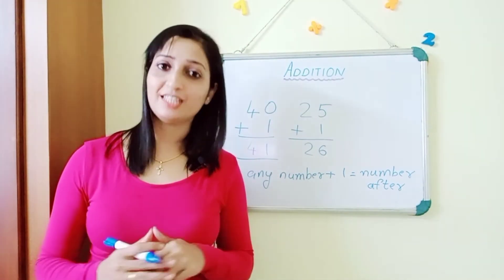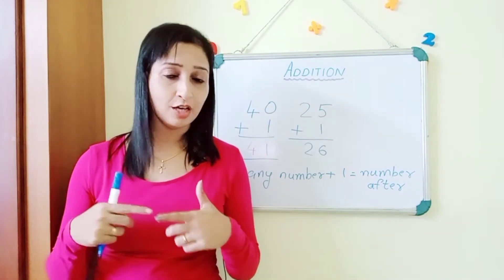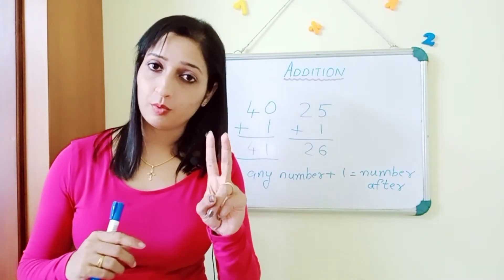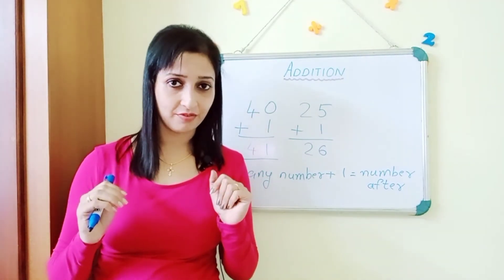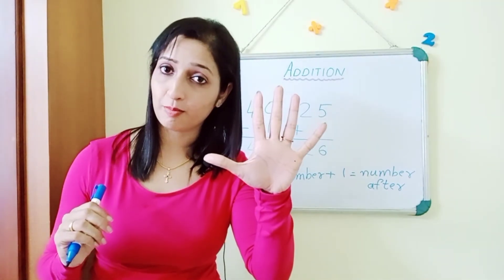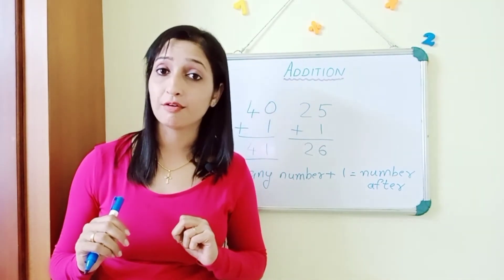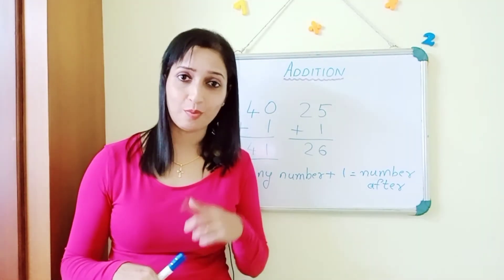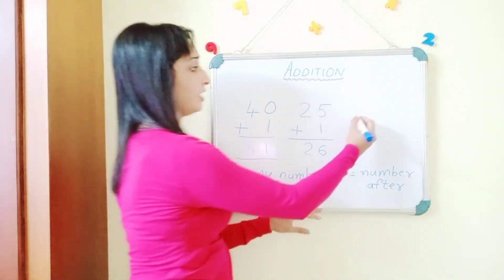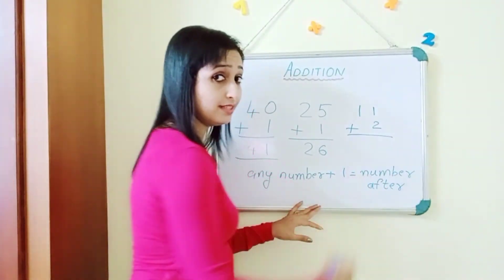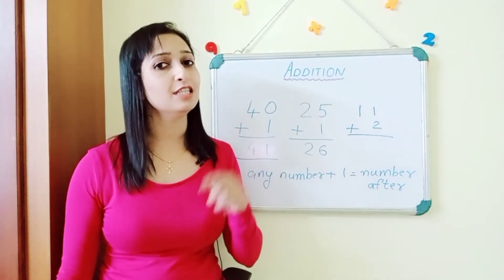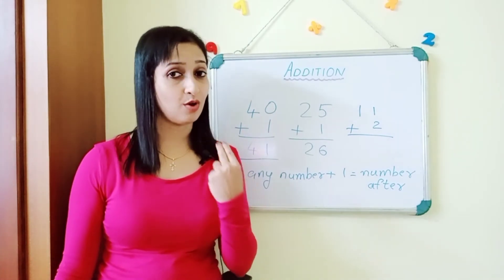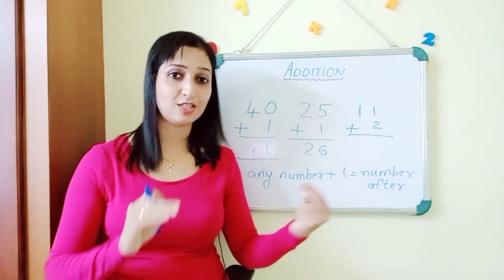Let's revise what we did today. First, addition of two one-digit numbers — for example, three plus five. Keep the bigger number in your mind: five in your mind, three in your hand. Count forward after five: six, seven, eight. Answer is eight. Then addition of a one-digit number with a two-digit number — for example, eleven plus two. Bigger number eleven in your mind, two in your hand. Count forward: twelve, thirteen. Answer is thirteen.